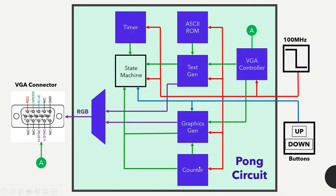We're going to have a counter for the score, which communicates with the graphics generator circuit, and that also communicates with the state machine. The ASCII ROM I created is going to be used for text generation. There's also a timer used for two seconds when resetting the ball and for the game over state before starting a new game. The state machine will have four different states for the game.